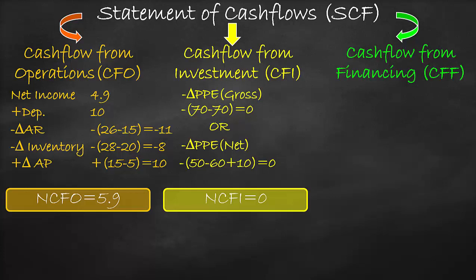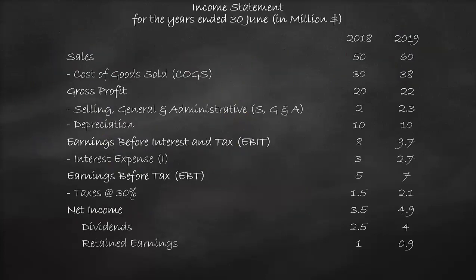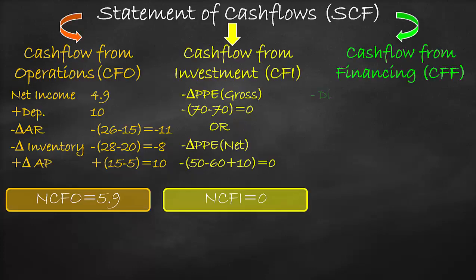Then we estimate the third category: cash flow from financing, which refers to non-operating liabilities and equity. Our first item is negative dividends in 2019 from the income statement. We use a negative sign because the firm distributes cash dividends to shareholders — from the company's perspective, this is a cash outflow. Negative dividends of $4 million.